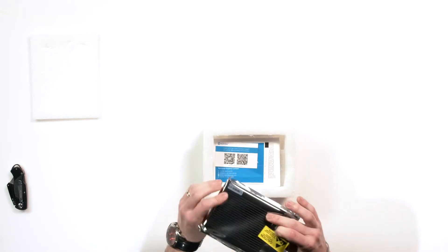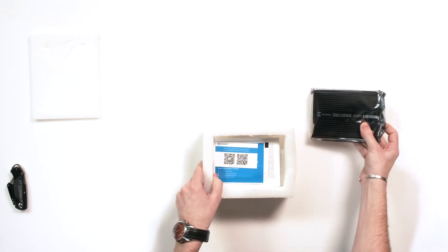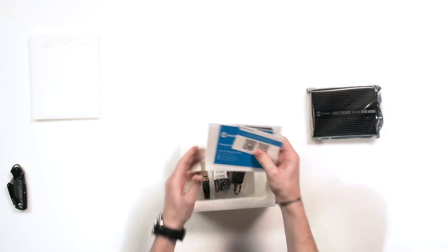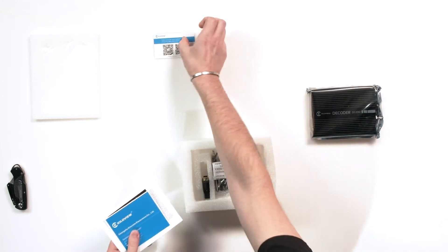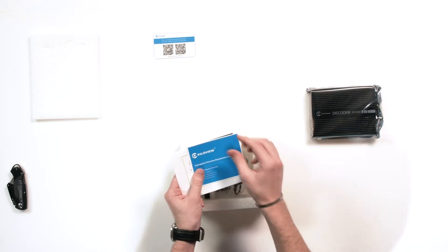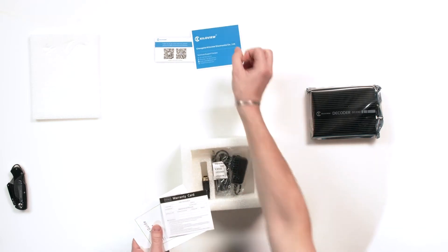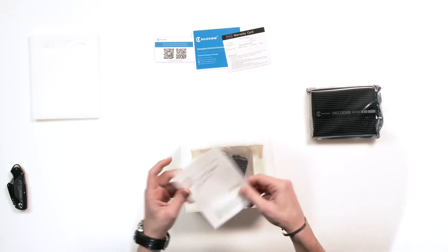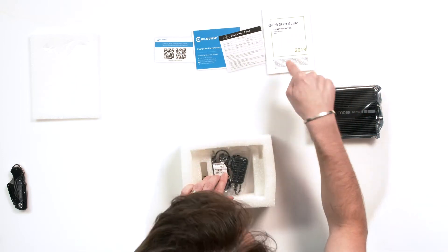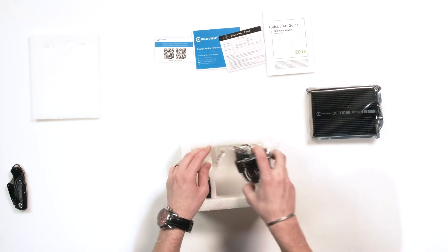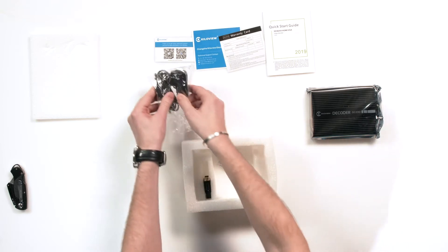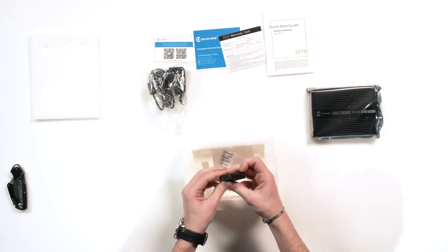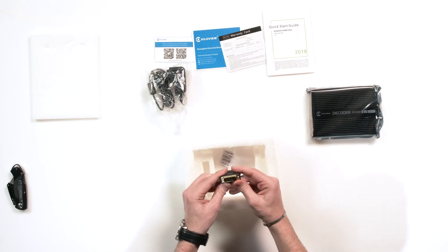The device is nice and tight in the anti-static bag, so let's put that to the side. Let's take a look at the usual stuff here: your card to get to Facebook and LinkedIn, your contact info, your warranty card, and your quick start guide from 2019. Your power cable, an adapter...